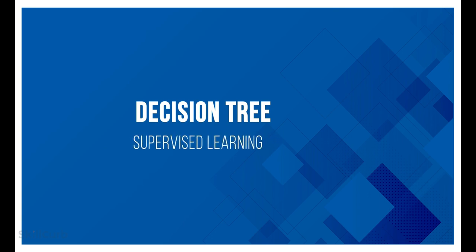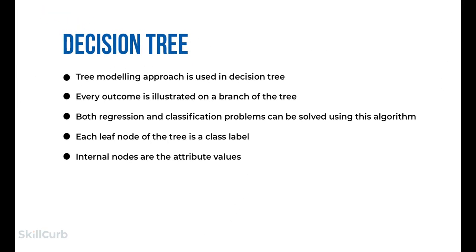A decision tree can be used to visually and explicitly represent decisions and decision-making. As the name suggests, it uses a tree-like model of decisions. A decision tree is a flowchart-like structure in which each internal node represents a test on a feature — for example, whether a coin flip comes heads or tails. Each leaf node represents a class label, and branches represent conjunctions of features that lead to those class labels. The paths from root to leaf represent classification rules.